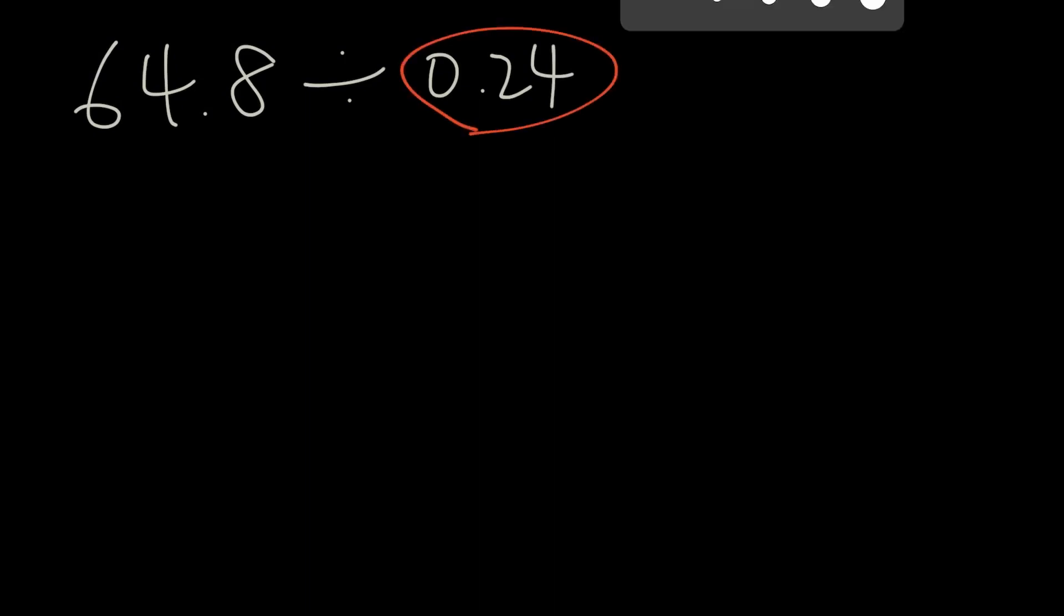What about this one: 64.8 divided by 0.24. Now let's do the same way where we look at the divisor of 0.24. So we take 64.8 divided by 0.24.